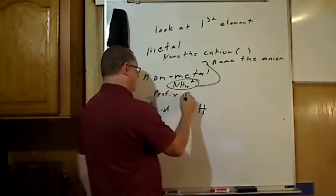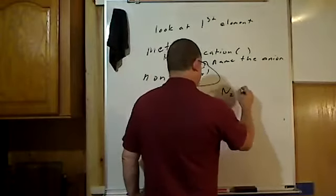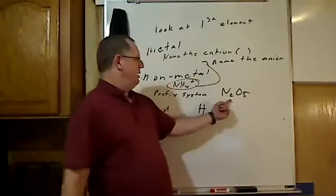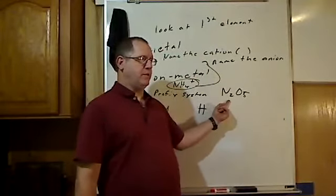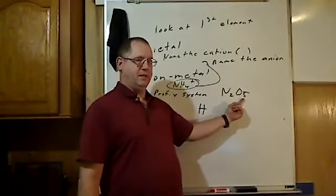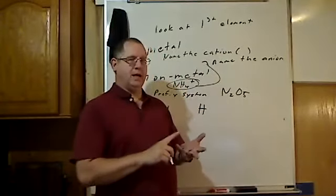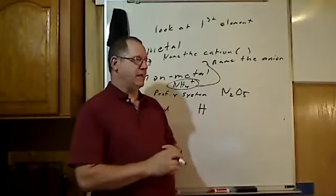Unless it's ammonium, which goes up into our ionic naming system, we're going to use the prefix system. For example, if it's N2O5, nitrogen, how many of them? Two. How do I say two nitrogens? Dinitrogen. How do I say five? Penta. Pentoxide. So mono, di, tri, tetra, penta, hexa, hepta, octa, nona, and deca.